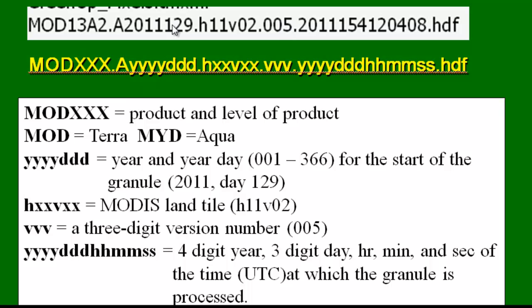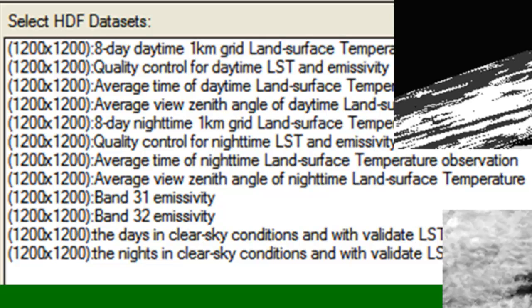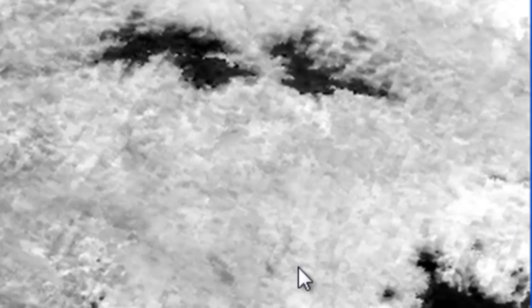For example, from the land surface temperature product, the first band is the daytime land surface temperature composited over an 8-day period — specifically the maximum land surface temperature over that period. The second band is quality control information. When you look at this HDF data in ArcMap it will appear very skewed because it's in the sinusoidal projection. Once reprojected into the Alaska Albers projection, cold pixels appear dark — glacier areas, and the Wrangell-St. Elias snow and glaciers.